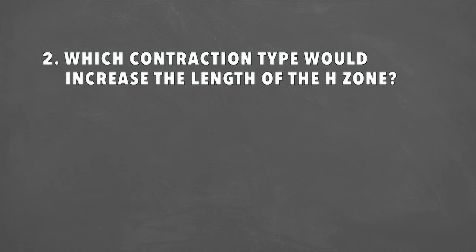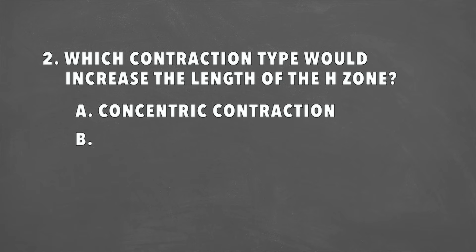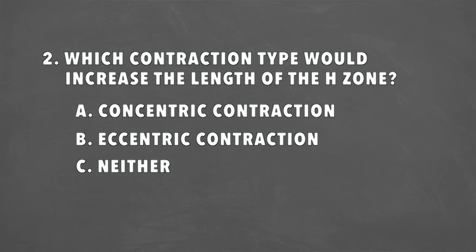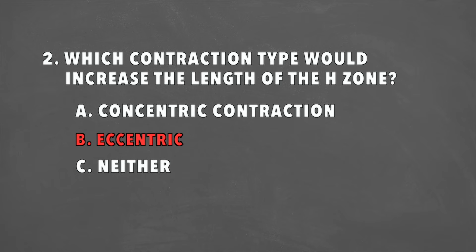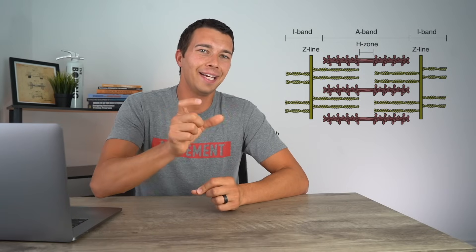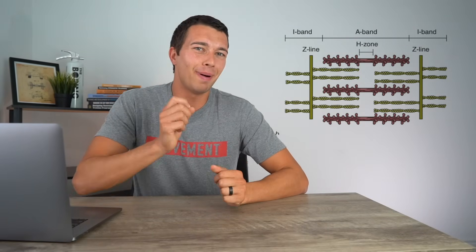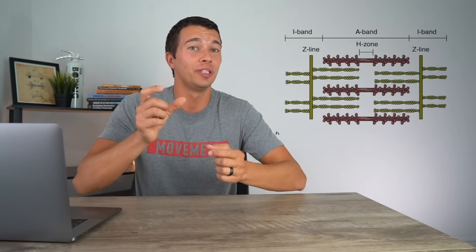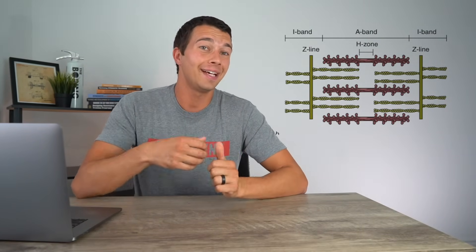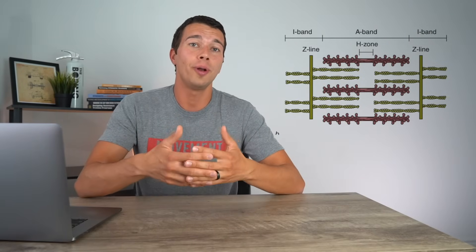Question number two: which contraction type would increase the length of the H zone? Choice A, concentric contraction; choice B, eccentric contraction; or choice C, neither? The answer is B, eccentric muscle contraction or lengthening of the muscle. The H zone is the middle chunk of the sarcomere that has myosin but no actin. As we concentrically contract, we reduce or completely eliminate the H zone. As we eccentrically contract or lengthen the muscle, we get more room in that H zone.